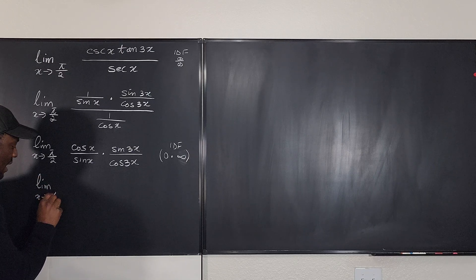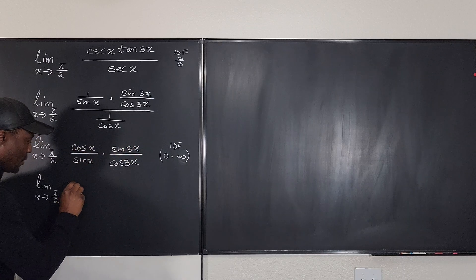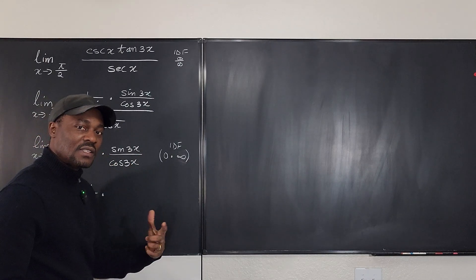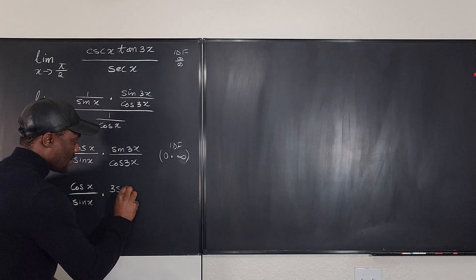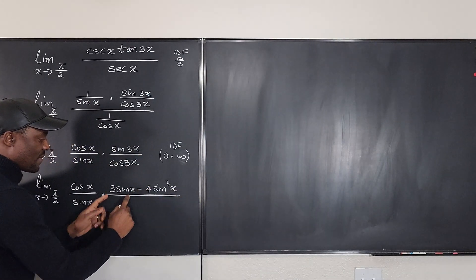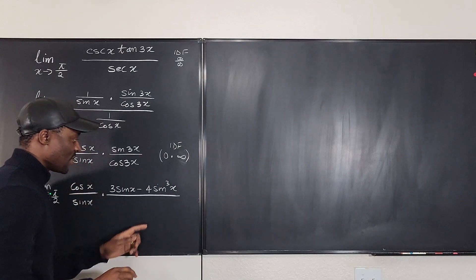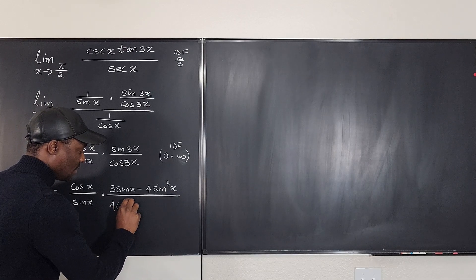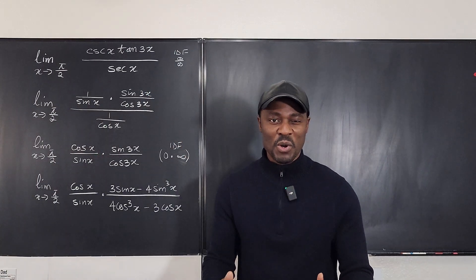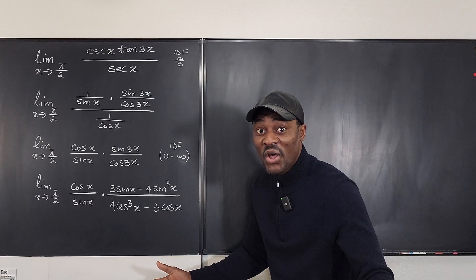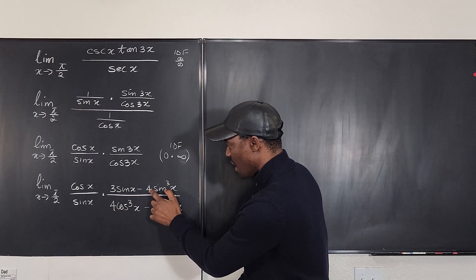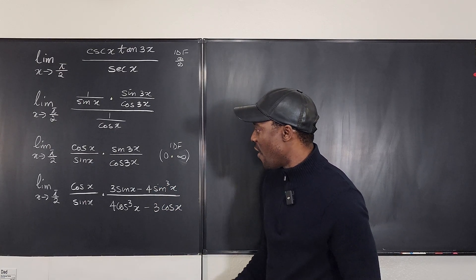Let's apply the triple angle identities. sin(3x) = 3sin(x) − 4sin³(x), and cos(3x) = 4cos³(x) − 3cos(x). Notice how similar they are — sine comes first in its identity, then the pattern goes 3 to 4 for sin and 4 to 3 for cos. The standalone number 3 always pairs with the single-power term.